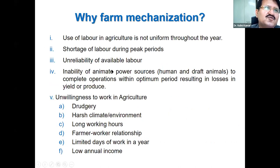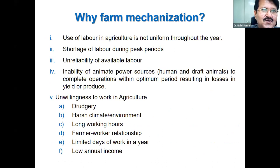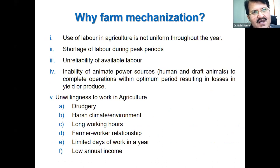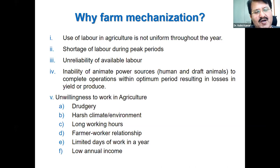Why farm mechanization? Why did we decide to mechanize our farms? Because use of labor in agriculture is not uniform throughout the year. Sometimes we require more labor, sometimes less. We cannot give work to labor throughout the year, and in peak periods, we cannot manage with the risk in human labor. Therefore, machine labor is needed to smoothen farm operations.